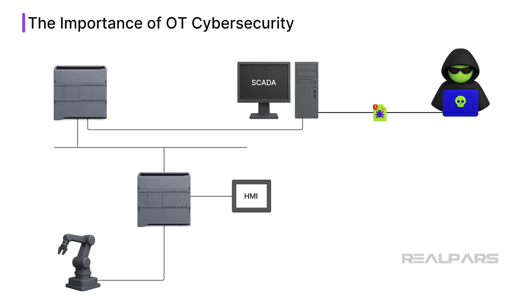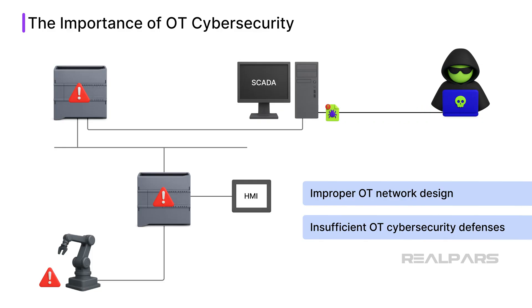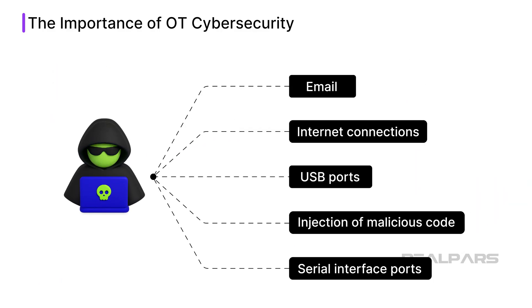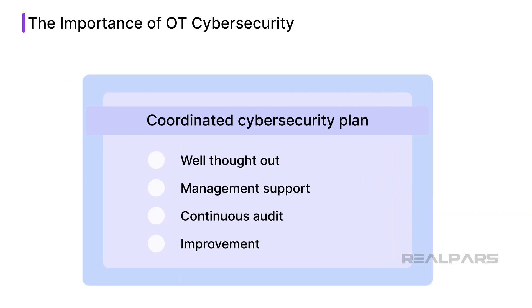Another motivation is simply to exploit weaknesses in the target's computer system, just to cause disruption in operations. The foremost reason these attacks happen is improper OT network design and insufficient OT cybersecurity defenses. Companies need to be aware of all the ways that hackers can penetrate computer systems — email, internet connections, USB ports, injection of malicious code, serial interface ports, just to name a few. Stopping cyberattacks involves multiple steps, and a coordinated plan that is well thought out, supported by management, and continually audited and improved.